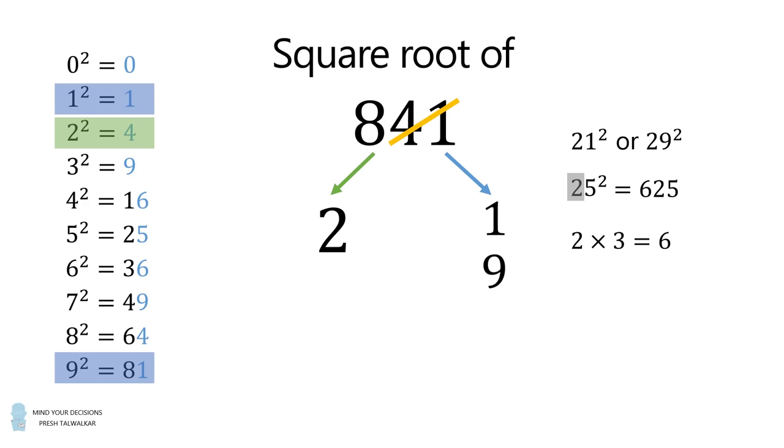Notice, 625 is smaller than 841. So, 25 squared is too little. So, it must actually be the case that 841 is equal to 29 squared. Thus, we take the larger option of 9. So, the square root of 841 is equal to 29.